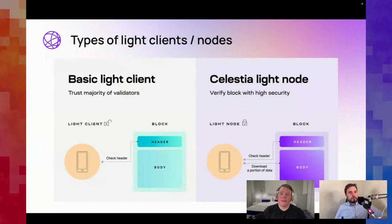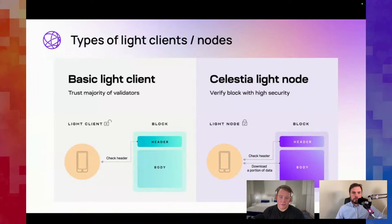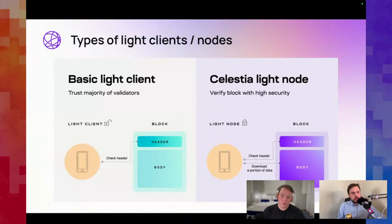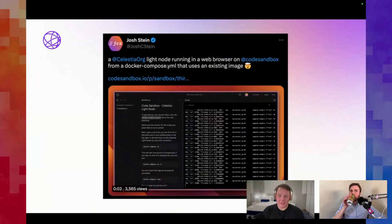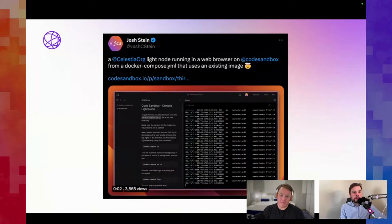Light clients on Ethereum trust a majority of validators — there's a high trust assumption that validators are being honest, with no way to check that anything beyond the header is accurate. At Celestia we're building light nodes that can verify blocks with high security by downloading only a small portion of the data. We've actually been able to run a light node in a browser via CodeSandbox's Docker compatibility — on devices with only a few gigabytes of memory and storage.